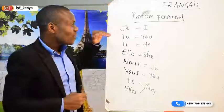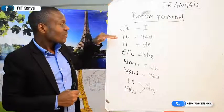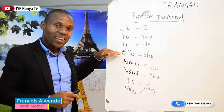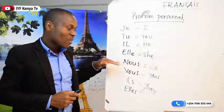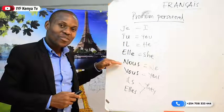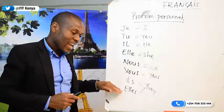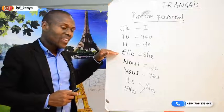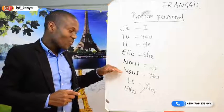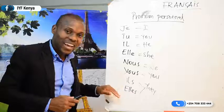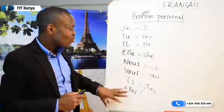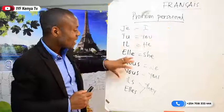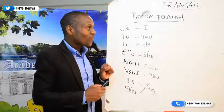So in French we pronounce like this: je, tu, il, elle, nous, vous, ils, elles. These are what we call the pronom personnel.